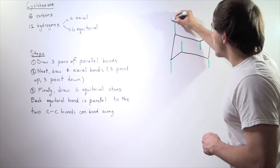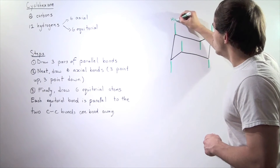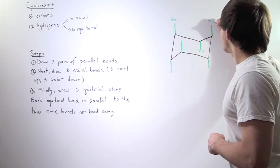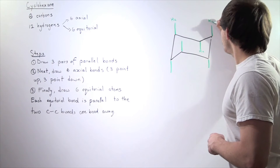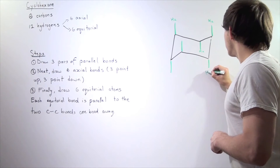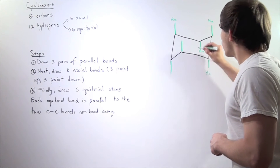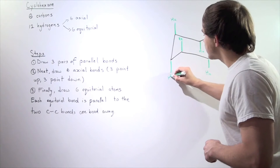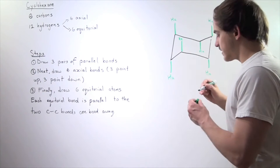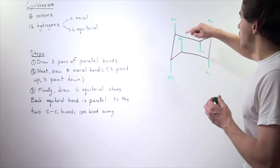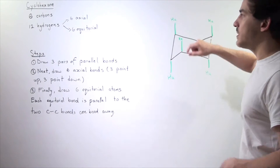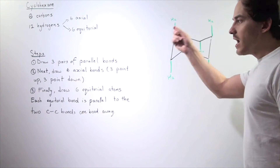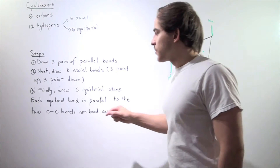So we have axial carbon one, axial carbon two, axial carbon three, axial carbon four, axial carbon five, and axial carbon six. The subscript A simply means axial. So onto step three.